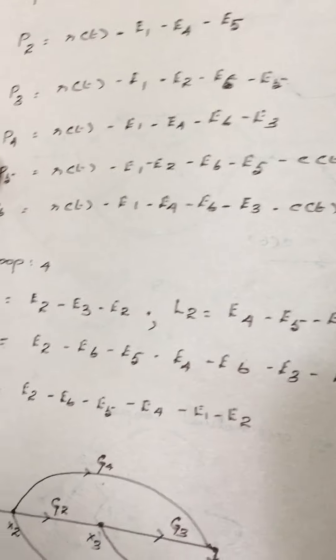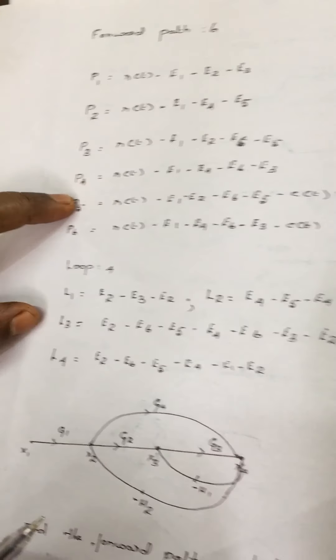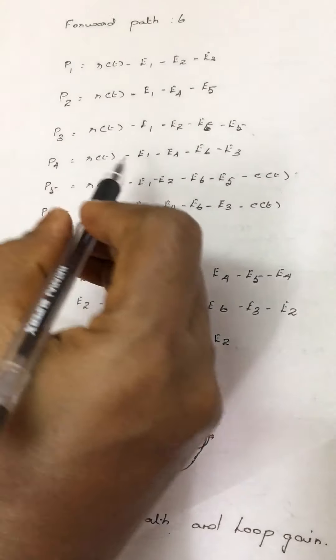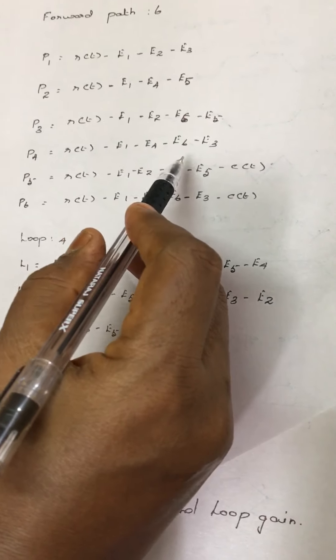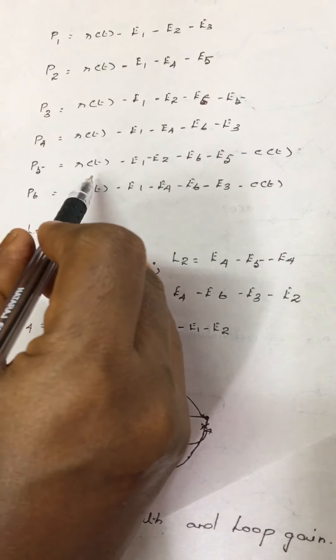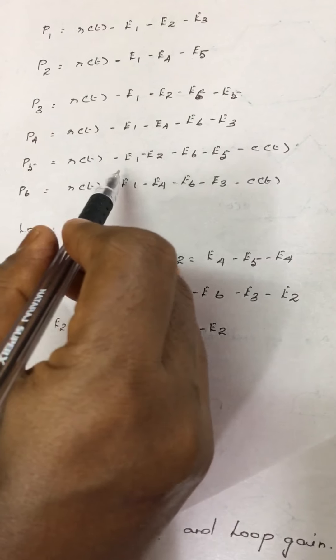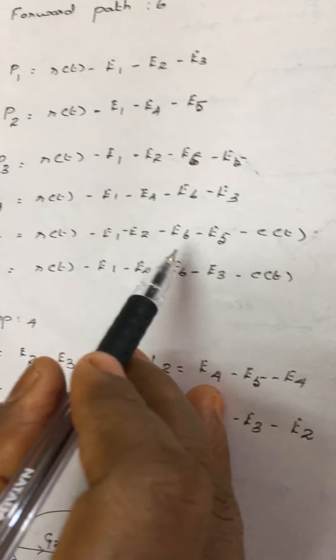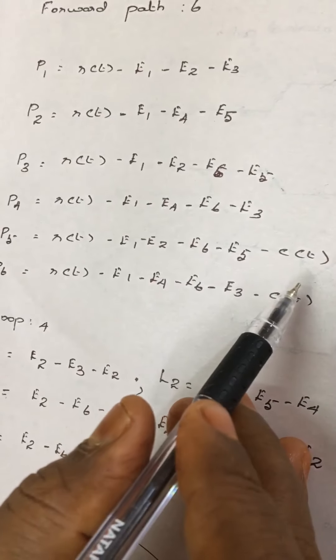Next forward path P4 equals R of T, E1, E4, E6, E3. P5 equals R of T, E1, E6, E5 to C of T.